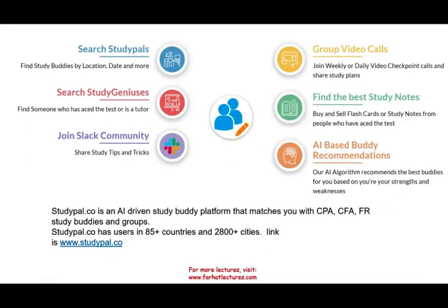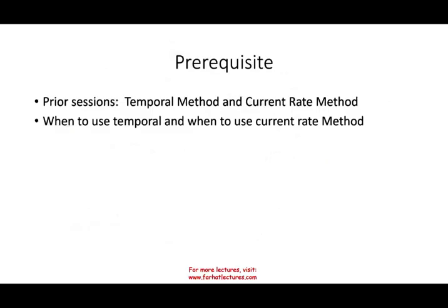If you are planning to study, it's good to study with more than one individual. Studypal.co will give you that option — it's an artificial intelligence-driven study buddy platform with users in 85 countries and 2,500 cities. It's helpful for this session if you already know what the temporal method and current rate methods are, and when to use each. I have links for those sessions in the description.